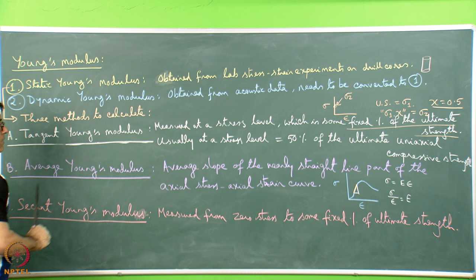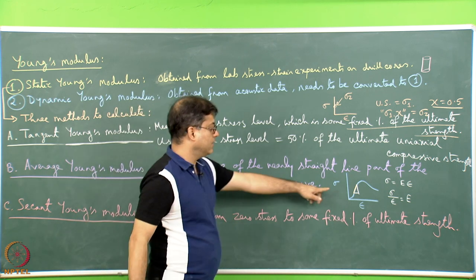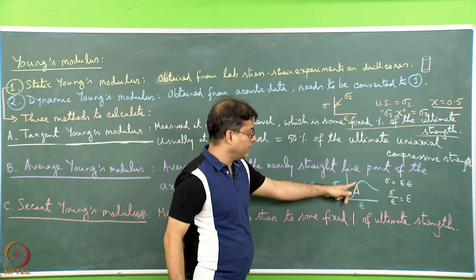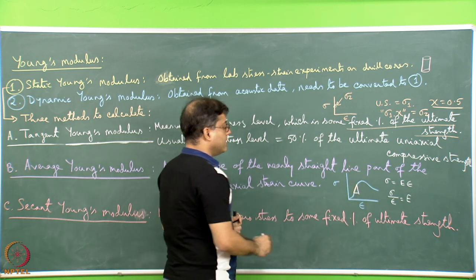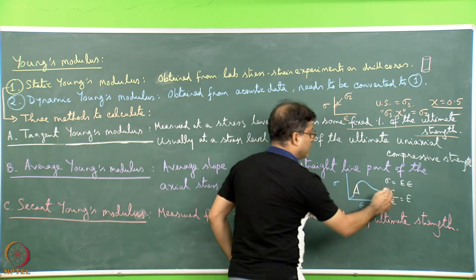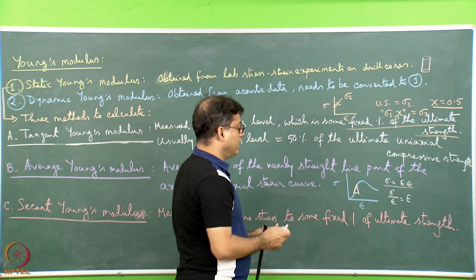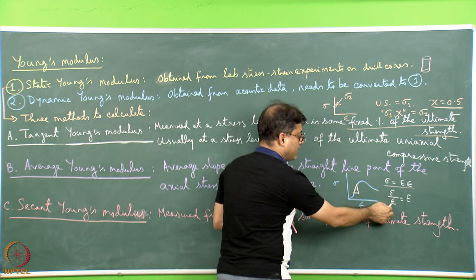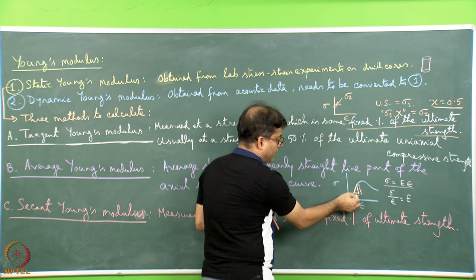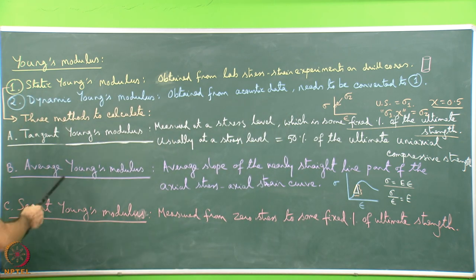The second method is the average Young's modulus: it is the average slope of the nearly straight-line part of the axial stress-strain curve. Within the linear region, applying stress equals E times epsilon and dividing the stress magnitude by the strain magnitude gives the E value. This length on the graph divided by the corresponding strain gives the Young's modulus — this is the average Young's modulus.